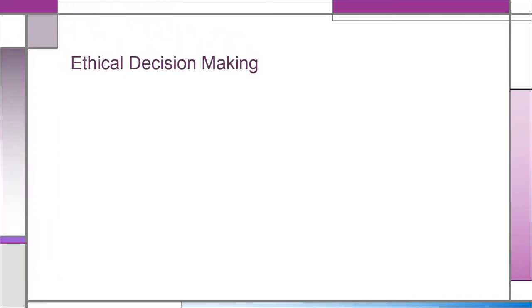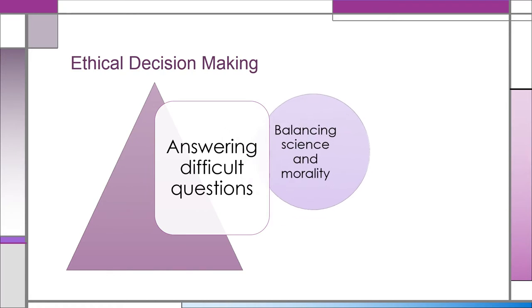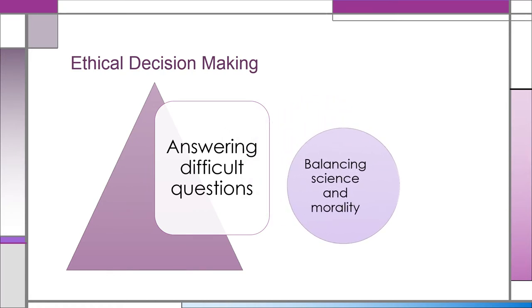Ethical decision making is a process of answering difficult questions. What is safe care? When staffing is inadequate, what care should be accepted or refused? What does it mean to be ill or well? What is the proper balance between science and technology and the good of humans? We need to balance science and morality. Nurses must examine life and its origins as well as its worth, usefulness, and importance, and determine their own values and seek to understand the values of others. Decisions are made with the patient, family, other nurses, and other healthcare providers. Nurses must develop a reasoned thought process and sound judgment in all situations within the nurse-patient relationship.